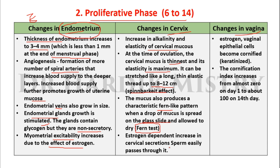The estrogen-dependent increase in cervical secretions helps sperm pass easily through the cervix. Changes in the vagina: under the effect of estrogen, vaginal epithelial cells become cornified or keratinized. The cornification index increases from almost zero on day one to about 100 times on day 14.